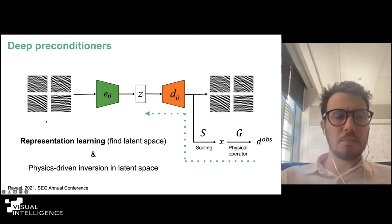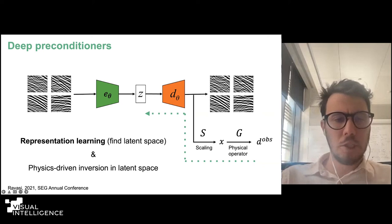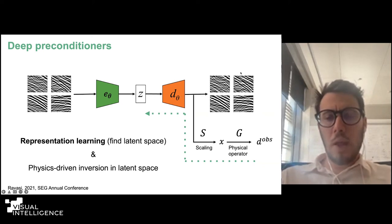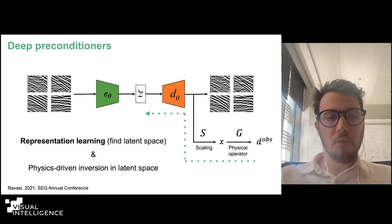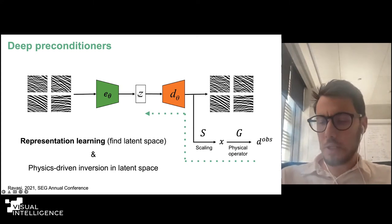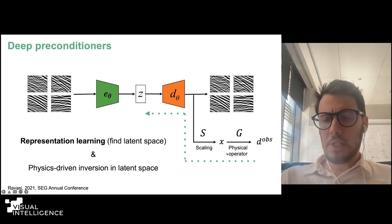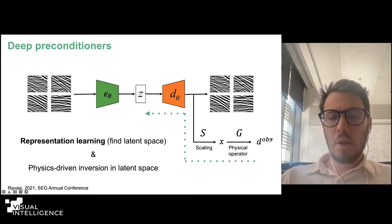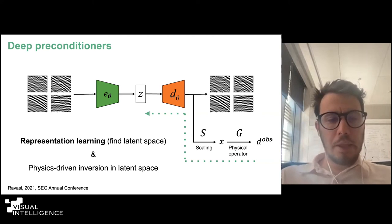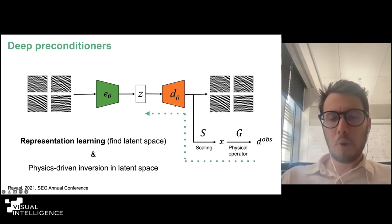We send it to the encoder and then to the decoder, and we try to reproduce the data itself. So what we're trying to do, we're trying to learn a representation in this latent space that is representative of the manifold of solutions that we are providing the network with. Once we are ready with this, instead of solving the inverse problem directly in the model space, we're going to try to solve the problem in this latent space. So we're going to invert for Z, and we're going to just combine these. Let's forget about this scaling for a second. We combine it with a physical operator, and we predict the data, and we compare these with the observed data. So in this way, we are not really getting rid of the physics. The physics is here, but also we are trying to use the power of neural networks as function approximators and better function approximators than our classical linear transformations.